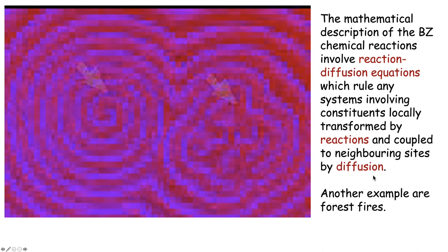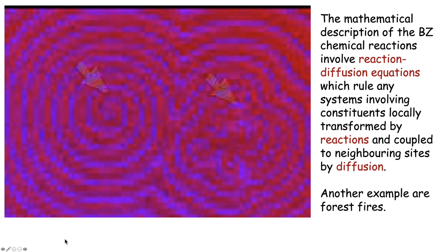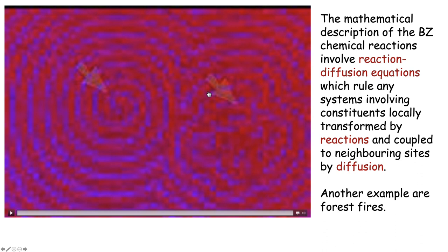Another good example are the forest fires, which also follow similar rules. This is a modeling of such equation. You can see again this complex spatial-temporal dynamics of a traveling wave, circumferential wave, expanding wave and spiral waves forming according to these reaction-diffusion equations.